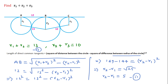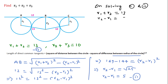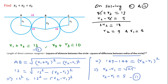On solving the first equation r1 plus r2 equals 13 and the second equation r2 minus r1 equals 5, the r1 terms cancel, giving 2r2 equals 18, which means r2 equals 9. Putting the value of r2 into the first equation, 13 minus 9, we get r1 equals 4. Putting r2 equals 9 into the third equation r2 plus r3 equals 10, we get r3 equals 1.